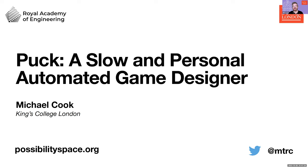So if we're not looking to build systems that produce infinite Rembrandts, then what are we trying to build? Well, this is Puck — the system I ended up building as an answer to that question. Puck is kind of like a Pokemon. This is the explanation I've been giving lately, and this is what I call the Pokemon model of AI. I'm going to explain what I mean by that in the next few slides.